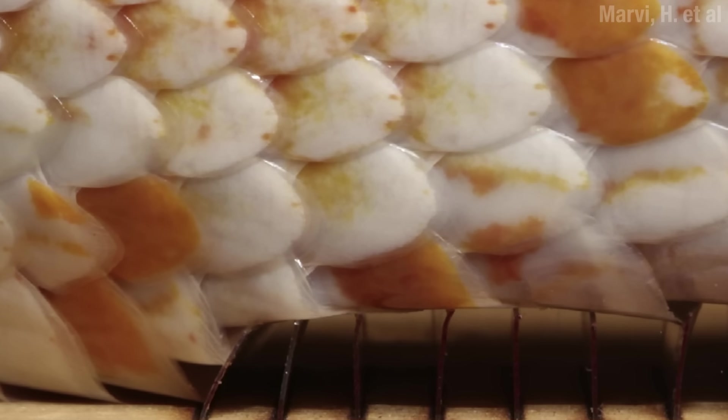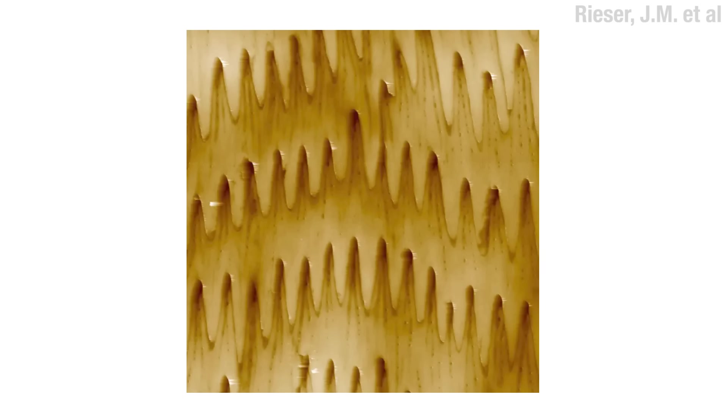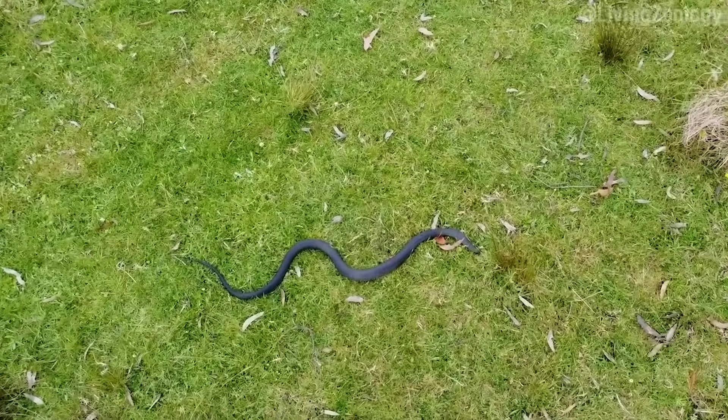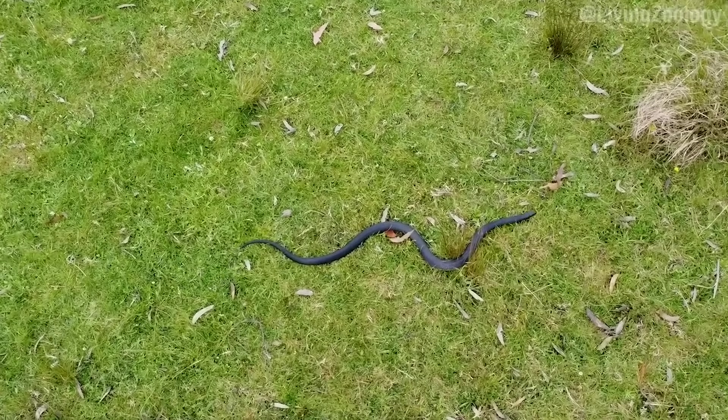And those scales might seem smooth. But if you look real close, they look like a cheese grater. The shape and direction of these ridges means moving forward is smooth going. But if you push back or off to the side, there's some friction. And this becomes very important in the most recognizable way that snakes move.